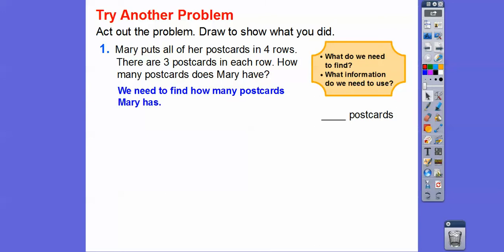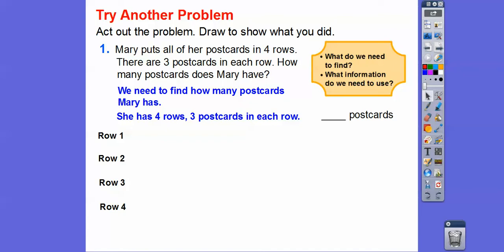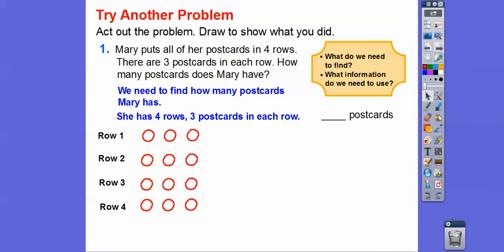What do we need to find? We need to find out how many postcards Mary has. What information do we need to use? We have four rows and there are three postcards in each row. So here are our four rows, and I'll draw three postcards in row one, and three postcards in all of the rows right there. Those little circles represent the three postcards in each row.